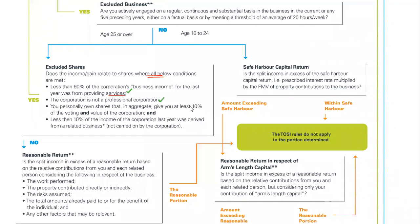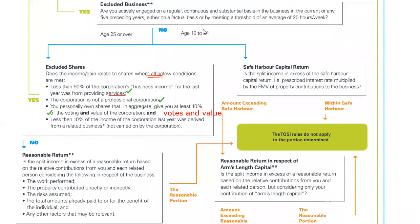A corporation is not a professional corporation — that is definitely not the case for an auto dealership. That would be true for an accountant or a lawyer or a doctor — those are all professional corporations. You personally own shares — this is the votes and value exemption — and it says you own 10% or more of the votes and value of the corporation. We're good to go there. And finally, this is a rule designed to eliminate holding company structures from being able to split income: less than 10% of the income of the corporation was derived from a related business. In this case all the income was originated from the actual car dealership, so less than 10% was derived from a related business. That's true.